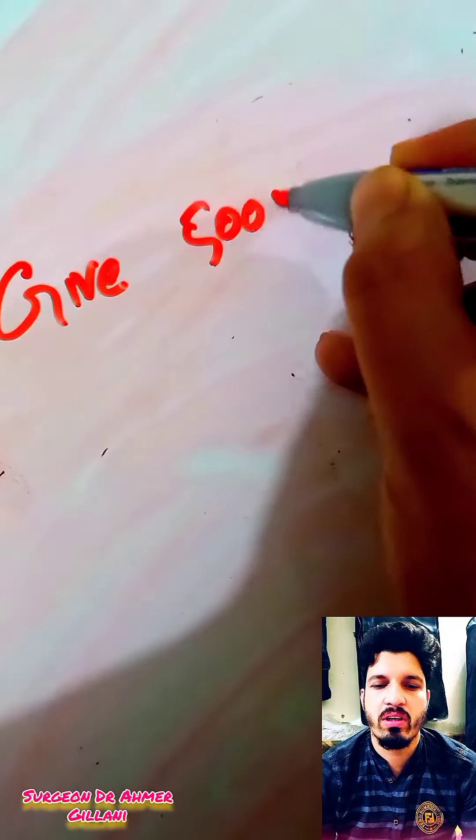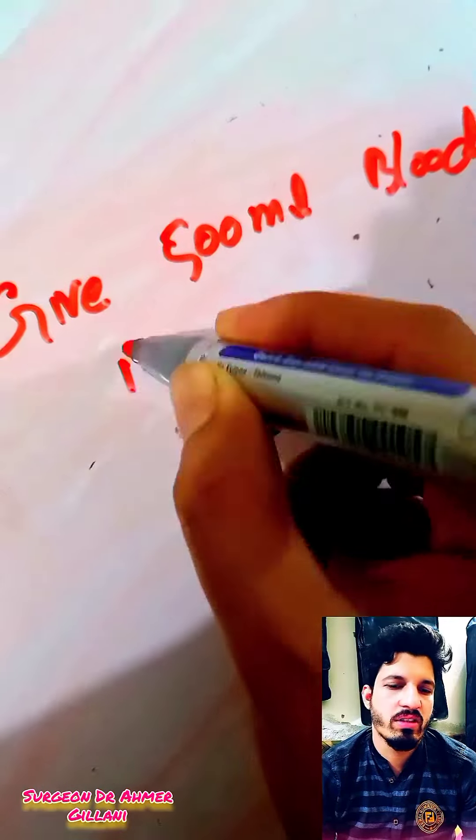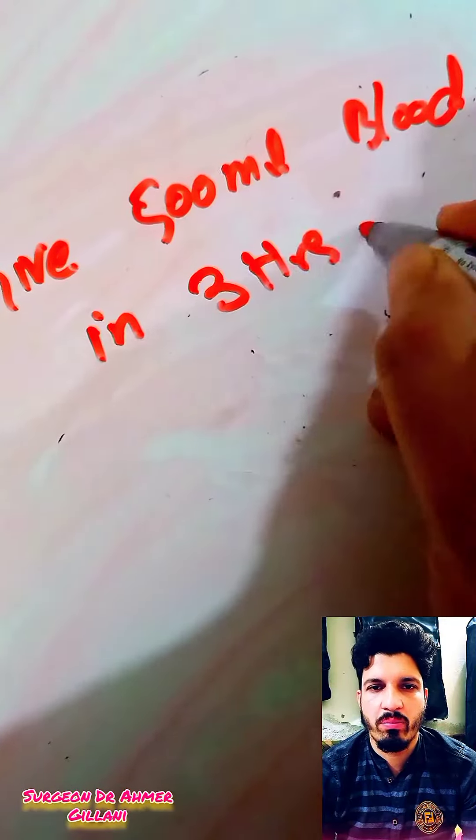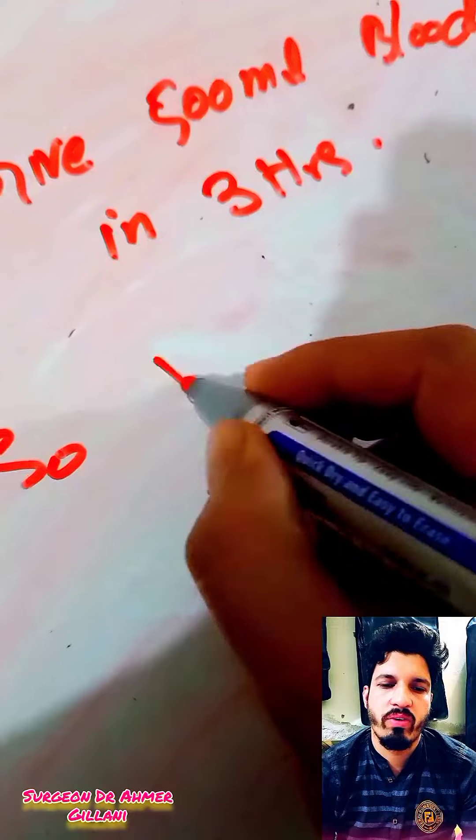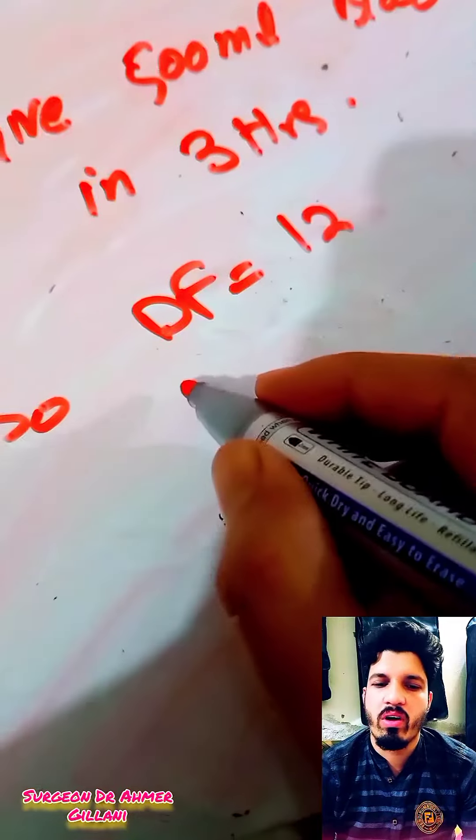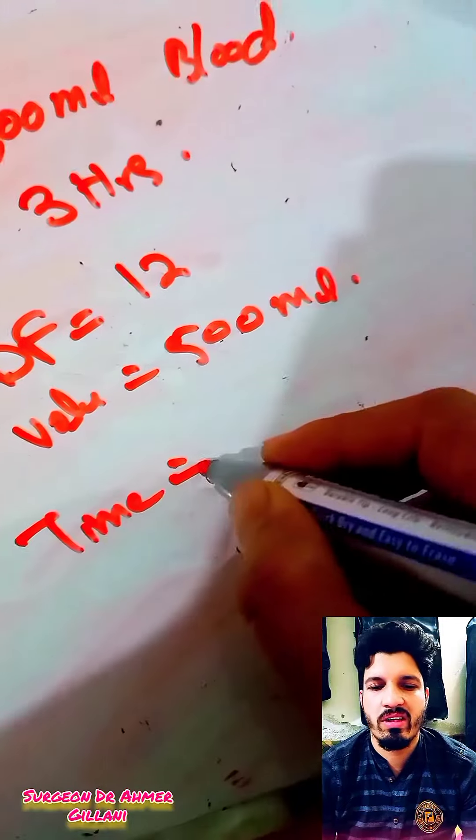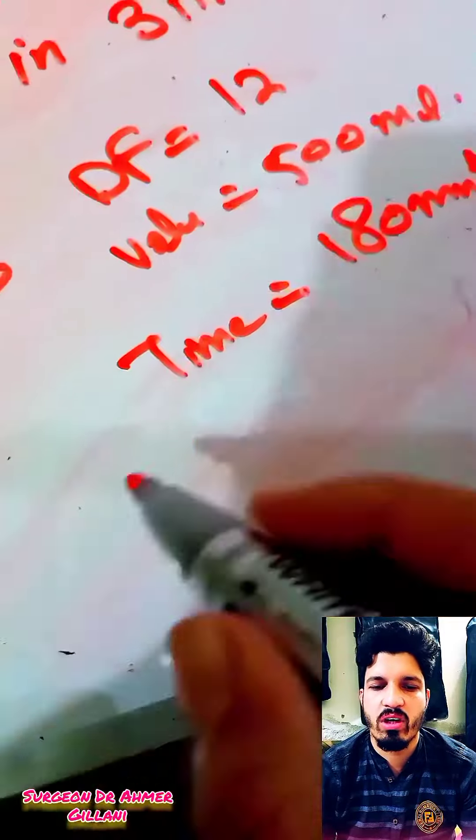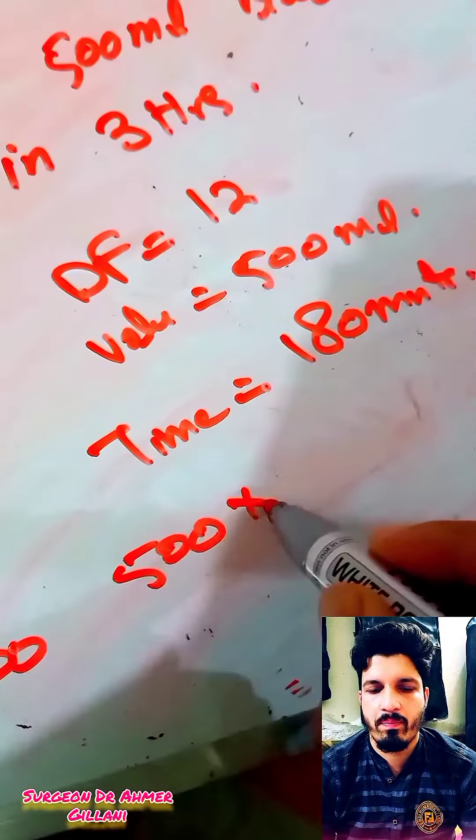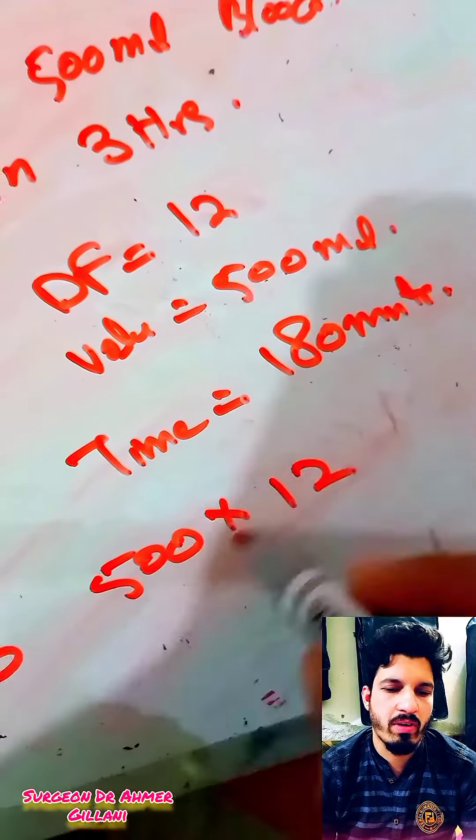So if you have a scenario, give 500 ml blood in three hours, we will apply the same tactics. Drop factor is 12, volume is 500 ml, and time duration is 180 minutes. So applying the formula, 500 multiplied by 12 divided by 180 is equal to 33.